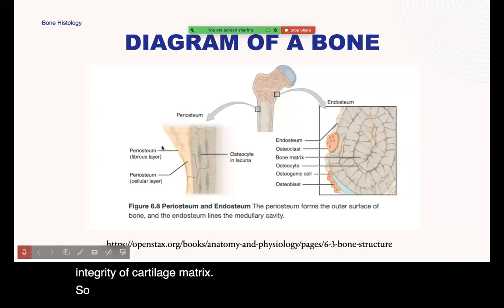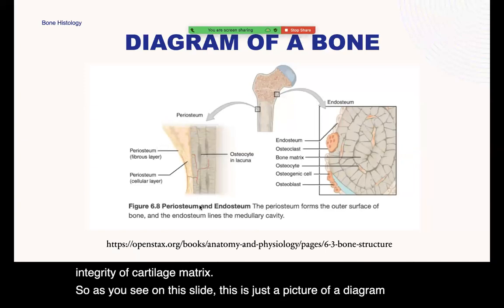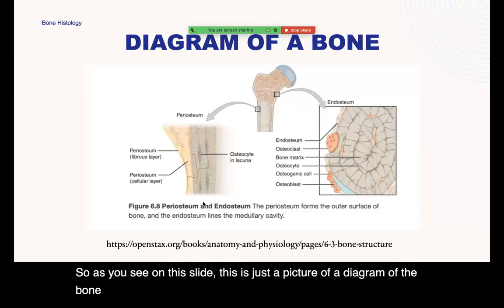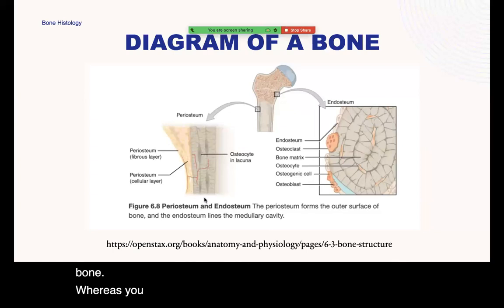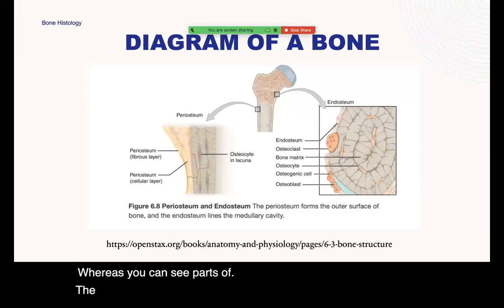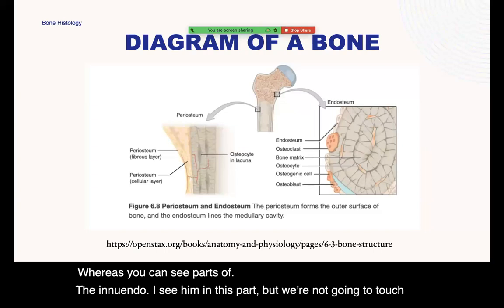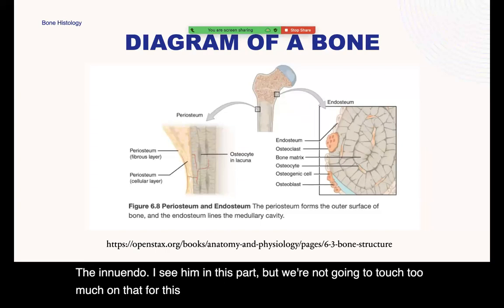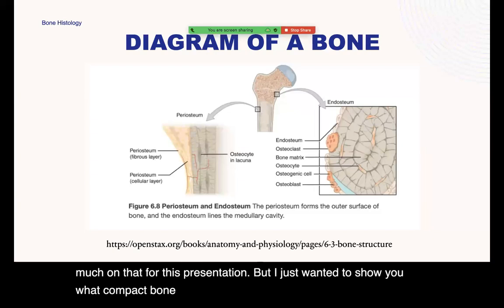As you see on this slide, this is a diagram of the bone where you can see parts of the periosteum and endosteum. We're not going to touch too much on that for this presentation, but I just wanted to show you what compact bone looks like versus spongy bone.